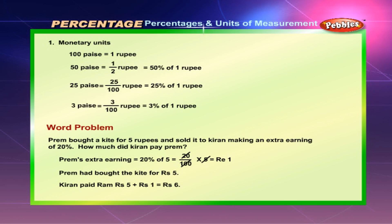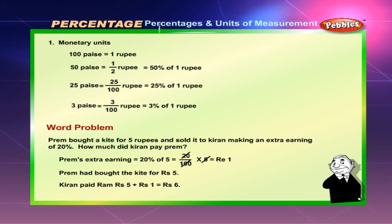Word problem: Prem bought a kite for 5 rupees and sold it to Kiran making an extra earning of 20%. How much did Kiran pay Prem? Prem's extra earning = 20% of 5 = 20/100 × 5 = ₹1. Prem bought the kite for ₹5, so Kiran paid ₹5 + ₹1 = ₹6.